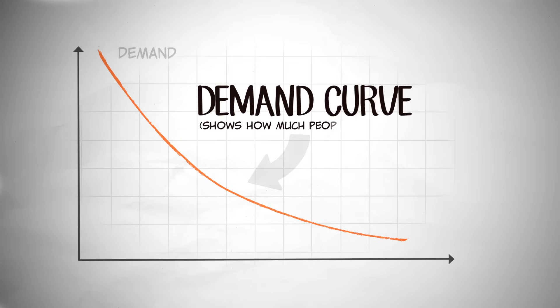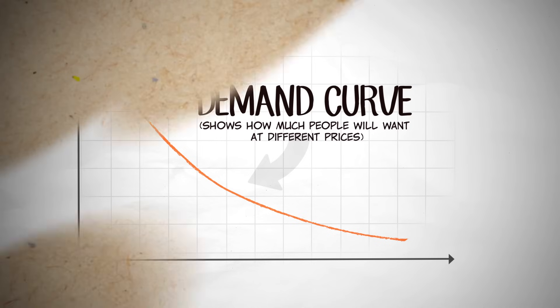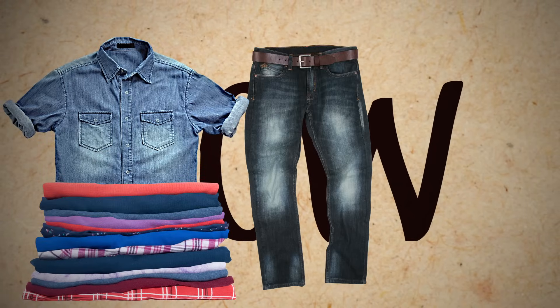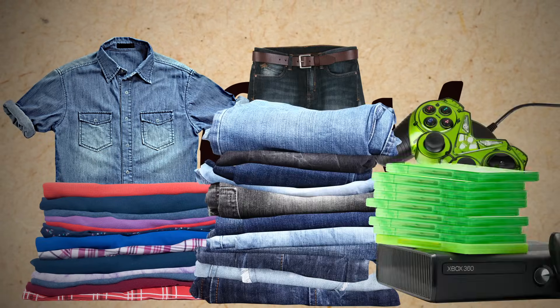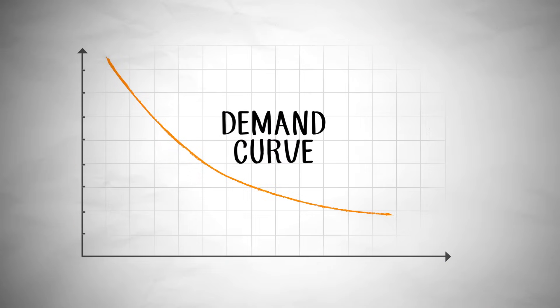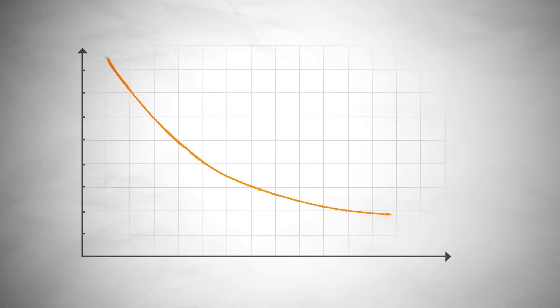A demand curve shows how much of a good people will want at different prices. What happens when there's a big sale? Well, at a lower price, people buy more — more shirts, more pants, more video games. This is what happens on Black Friday when retailers lower their prices to get people to buy stuff for Christmas. The demand curve illustrates the intuition for why people go nuts on Black Friday.